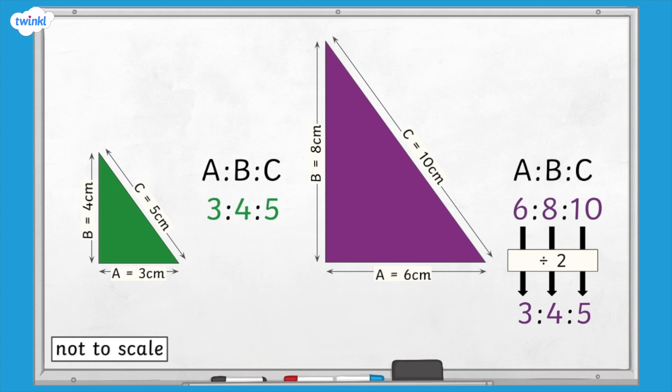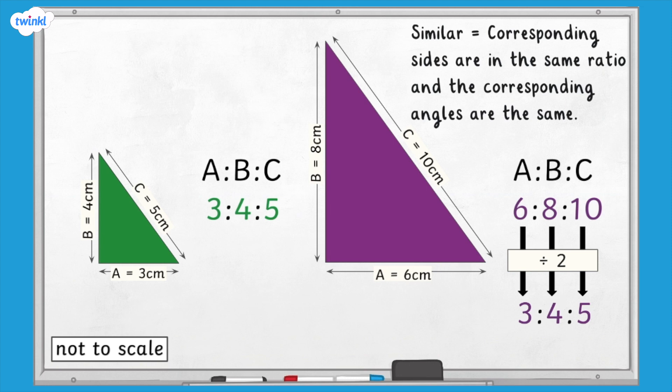As the lengths of the corresponding sides are in the same ratio in both shapes, we can say that these shapes are similar. Furthermore, the corresponding angles in both similar triangles will remain the same.